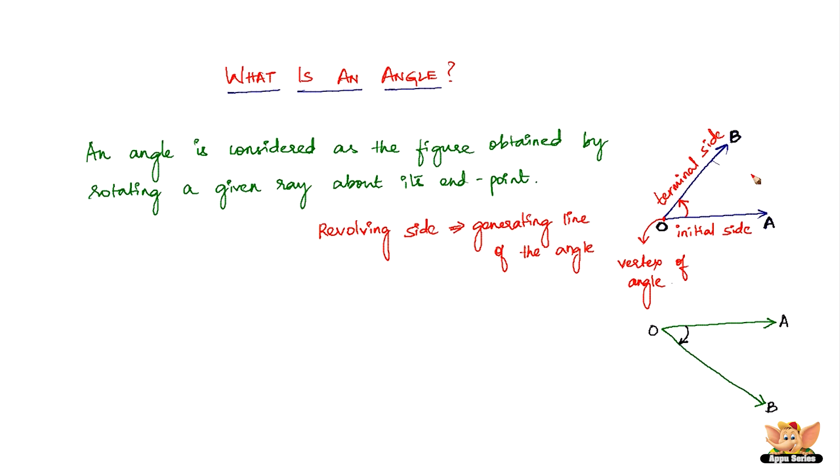This is an angle: if line OA rotates around its vertex to form another side, the terminal side, then you can say that angle AOB is generated. This is angle AOB, or it can also be called angle BOA.